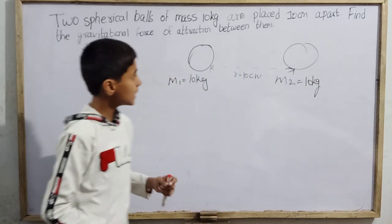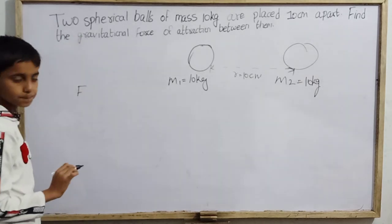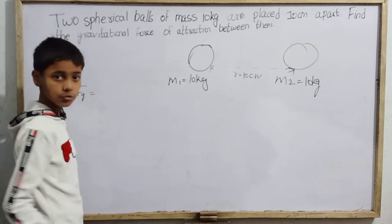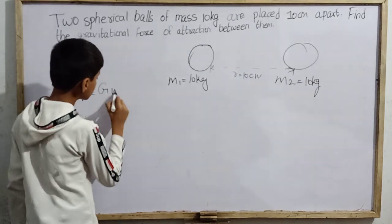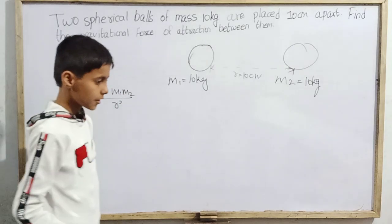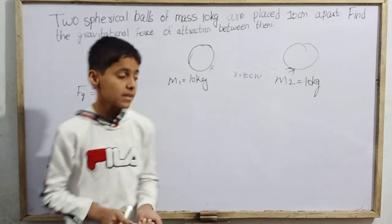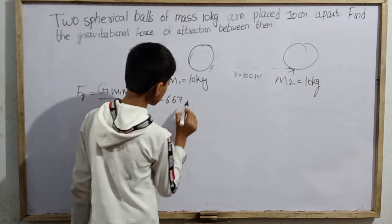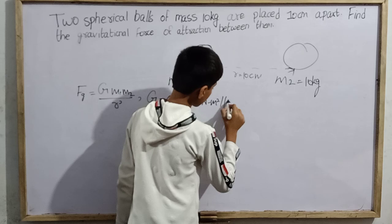We need to find the gravitational force between them. According to the formula, the gravitational force between two masses m1 and m2 placed at a separation r is F = G·m1·m2 / r². From experiments, the value of the gravitational constant G is 6.67 × 10⁻¹¹ N·m²/kg².